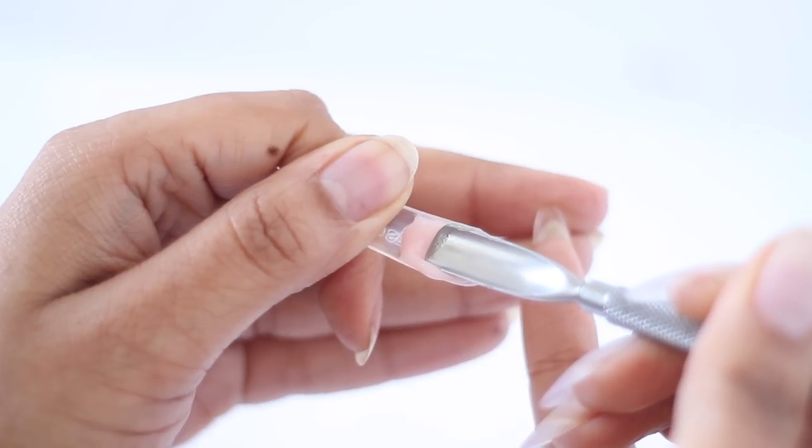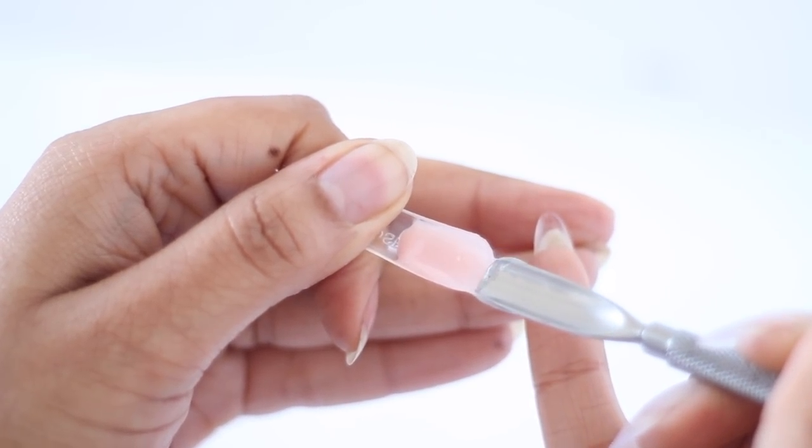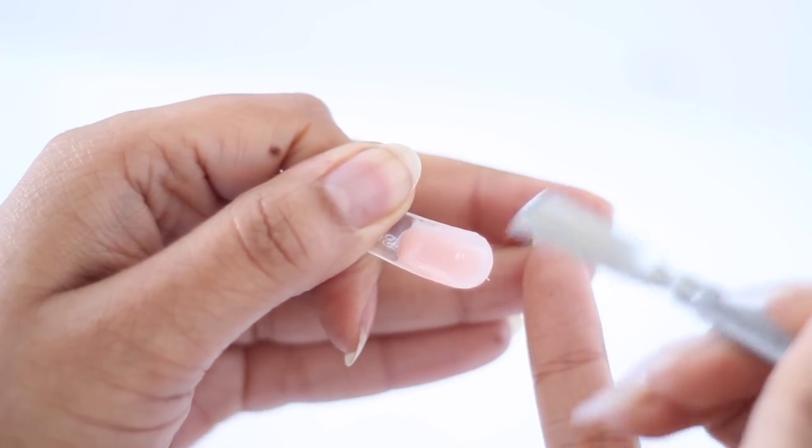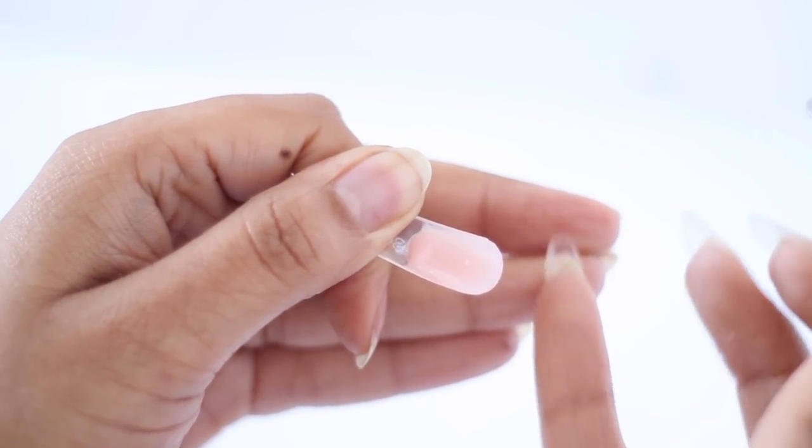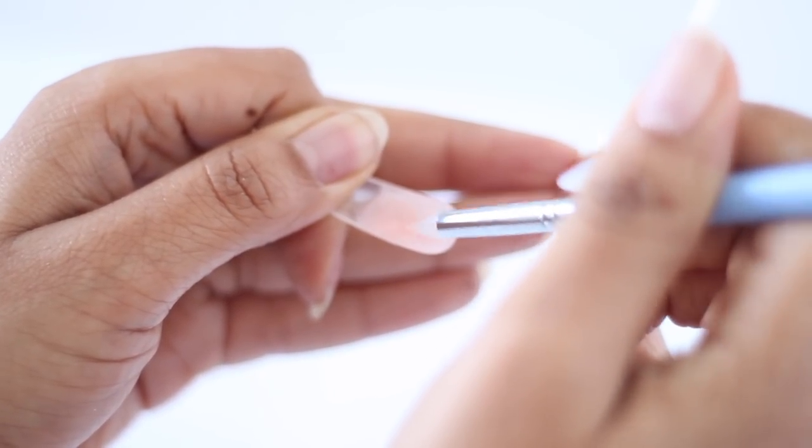Now, with the cuticle pusher application method, you can see you save a lot of time, and you don't have to fiddle with the gel as much. However, if you do want to make any adjustments, I don't even use a brush. I just use a silicone tool and move the gel where I want it to go.